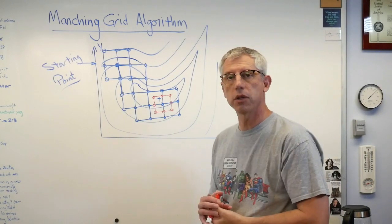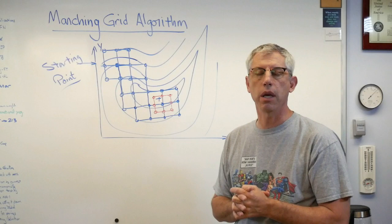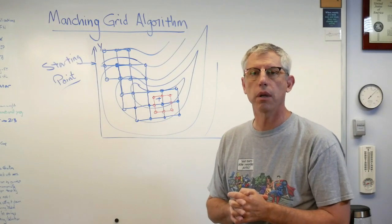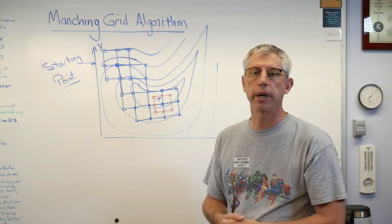Until the size of the grid is small enough that I have all the precision I need. I found the minimum value of the objective function as accurately as I need to find it. I will have satisfied my exit criteria, and I stop. That's marching grid.